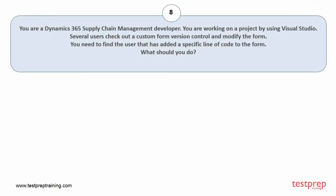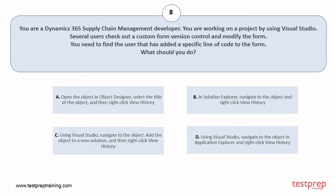Question number 8. You are a Dynamics 365 Supply Chain Management developer. You are working on a project using Visual Studio. Several users check out a custom form in version control and modify the form. You need to find the user that has added a specific line of code to the form. What should you do? Your options are: A. Open the object in Object Designer, select the title of the object, and then right-click View History. B. In Solution Explorer, navigate to the object and right-click View History. C. Using Visual Studio, navigate to the object, add the object to a new solution, and then right-click View History. D. Using Visual Studio, navigate to the object in Application Explorer, and right-click View History. The correct answer is option D.